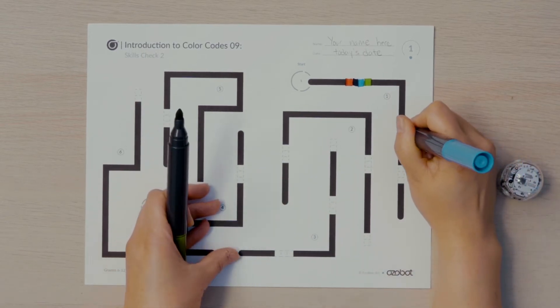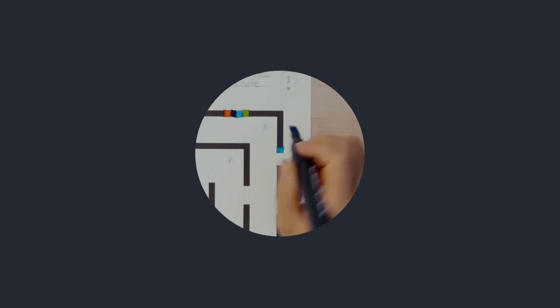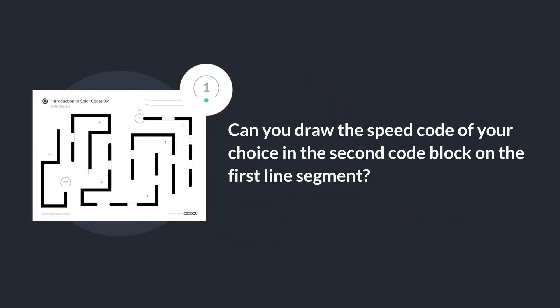You will set the speed of the bot two more times on the next two line segments. Can you draw the speed code of your choice in the second code block on the first line segment?